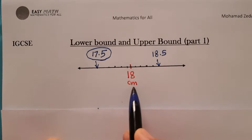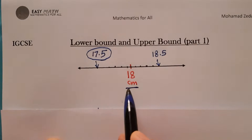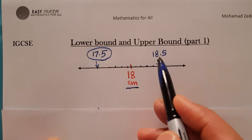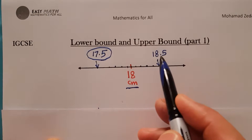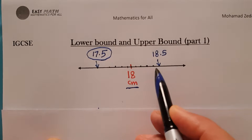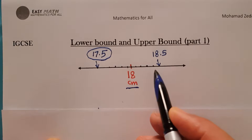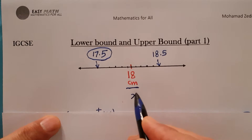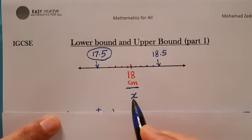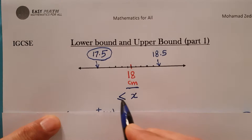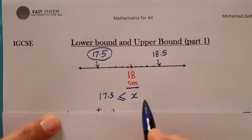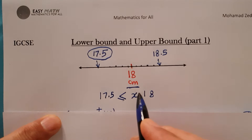This means 17.5 is the smallest number that, if you round it to the nearest unit, gives you 18. And 18.5 — not 18.5 itself, just the number just before 18.5. So for this reason we write: the possible value X of the length of the pencil lies between 17.5 and 18.5.